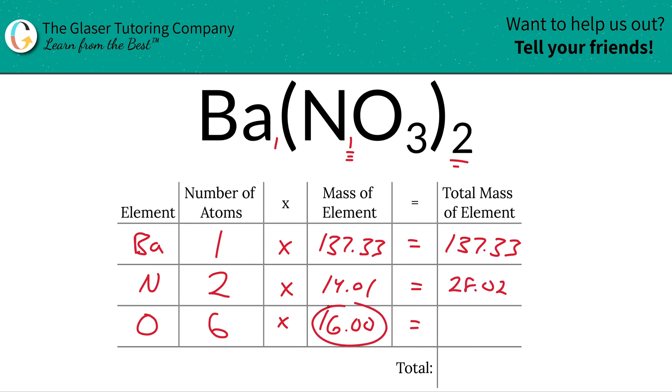And then same thing for oxygen. You've got each oxygen weighs 16, right? You've got six oxygens, so that's just going to be simply 96. And to find now the total mass of the compound, add this up. That's it. We're all done. So this is 261.35.